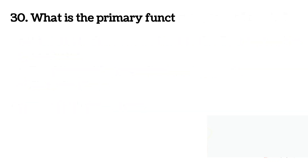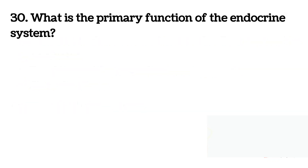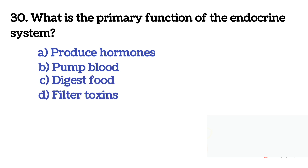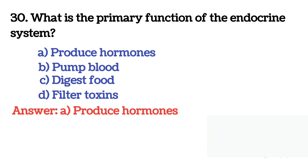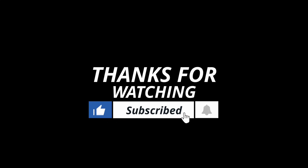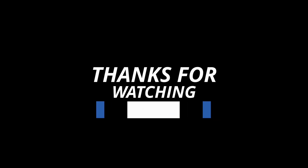Next question: What is the primary function of the endocrine system? The correct answer is A: produce hormones. Thanks for watching this video. Please do like, subscribe and press the bell icon for more videos. Thank you for watching.